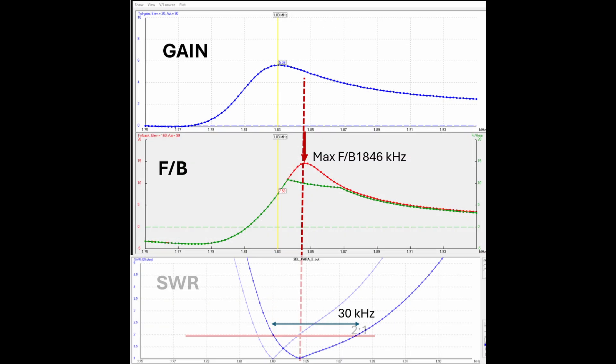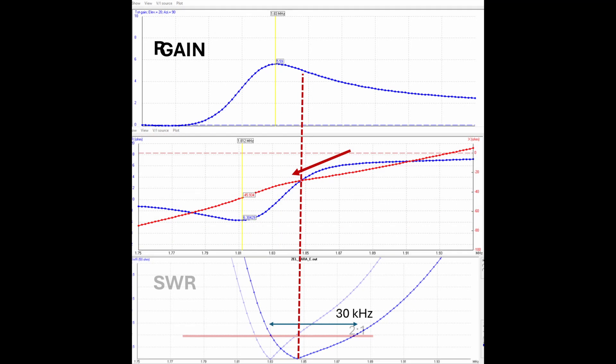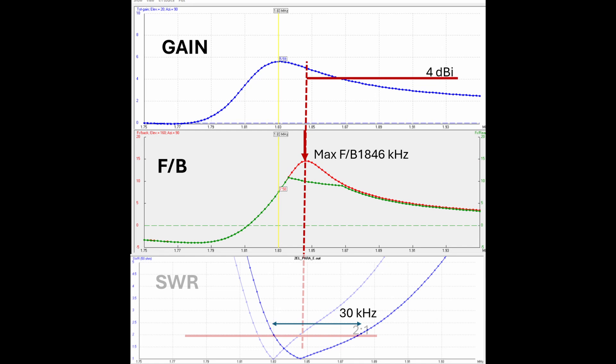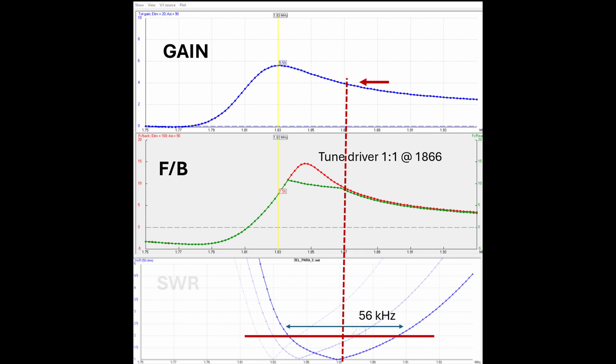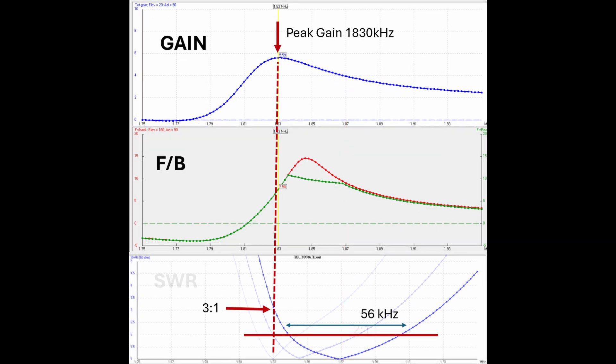However, if we tune the driver up here at the peak front-to-back point at 1846 kHz, we get a very nice broad SWR curve. That's because the R curve is not so steep here. All right, well this looks good, but hey, notice that the gain is really rather poor above this 1-to-1 point. Also, the peak gain down here at 1830 will be at the 2-to-1 point, almost outside the operating window. Well hey, we could also tune the driver way up here at 1866 kHz and get this really nice broad 56 kHz 2-to-1 window, but hey look, if we try and transmit down here at the peak gain point, I mean the SWR is 3-to-1. Yeah, that's not good.